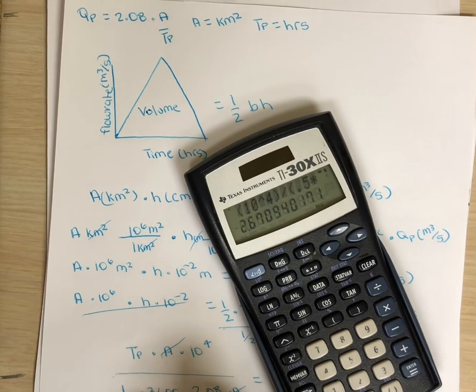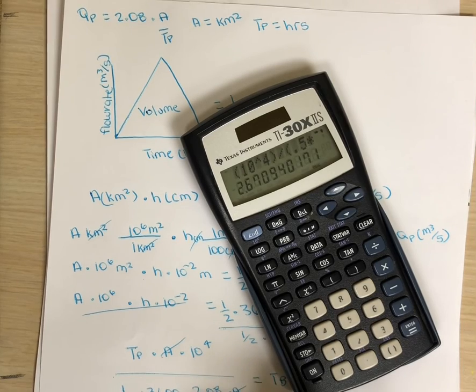We find that tb is equal to 2.67 tp, and this is equal to the time base.